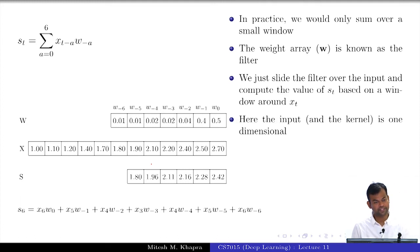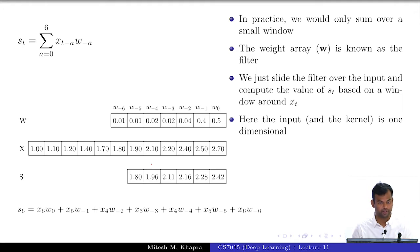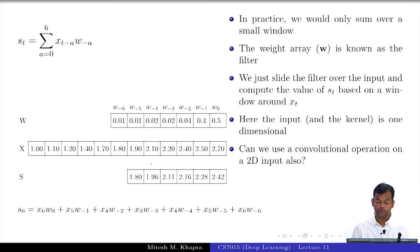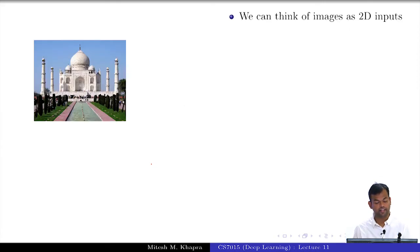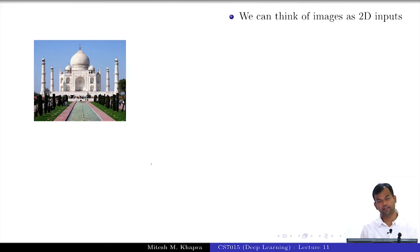Here the input as well as the kernel is one-dimensional. But can you use a convolution operation on a 2D input? Images are 2D inputs, so we can think of images as 2D inputs.